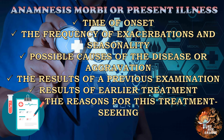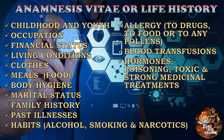In this part, we will gather information about the present illness: we have to know the time of onset, the frequency of exacerbations and seasonality, possible causes of the disease or aggravations, the results of previous examination, results of earlier treatment, and the reasons for this treatment seeking. The final part of the subject to examination is anamnesis vitae or the information about the patient's life history.